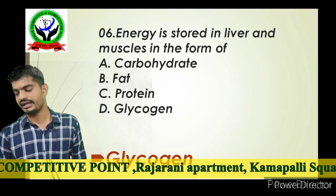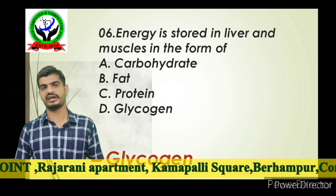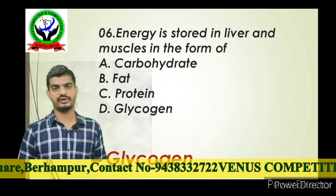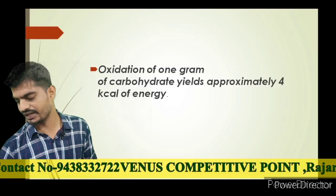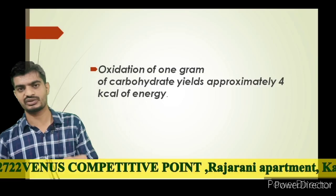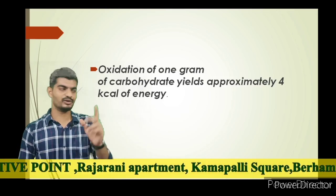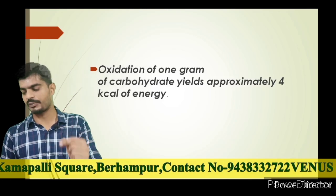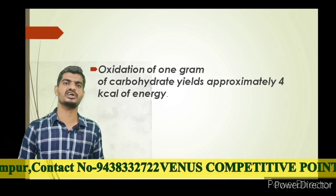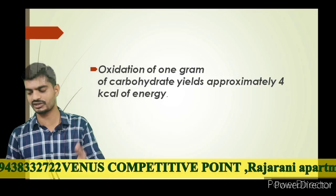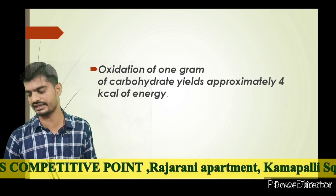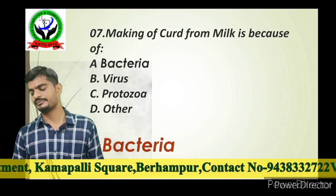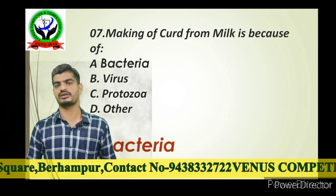Energy is stored in the liver and muscle in the form of glycogen. Next question: 1 gram of carbohydrate oxidized liberates approximately 4 kcal of energy.